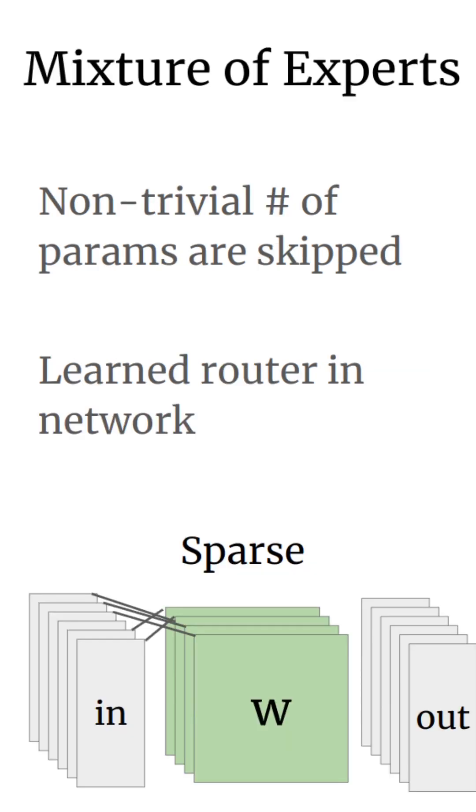An alternative is to use an architecture where a non-trivial number of the parameters are skipped entirely. A popular choice for this is a mixture of experts model. This uses a learned router in the network itself to decide which subset of parameters are used. The parameters are grouped into experts and each input is only passed to a subset of the experts at each layer of the network.